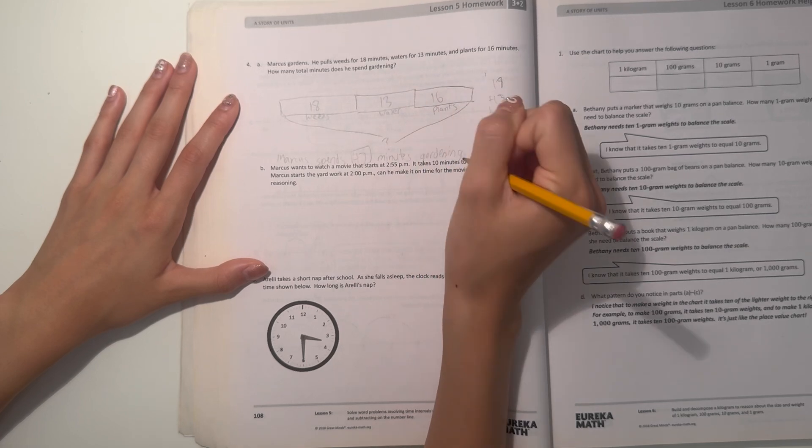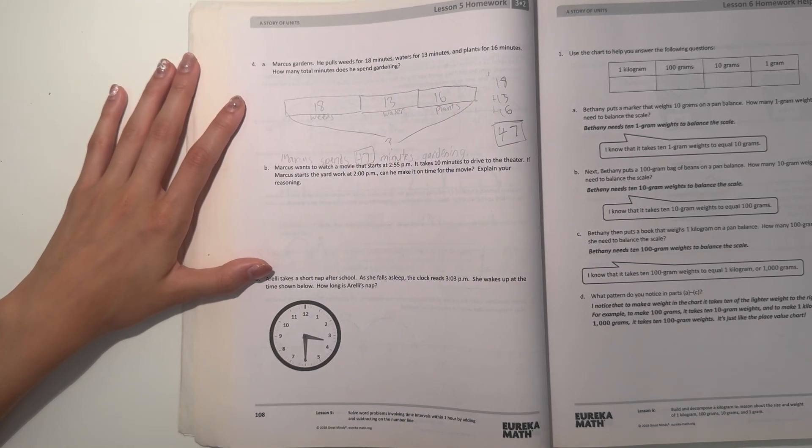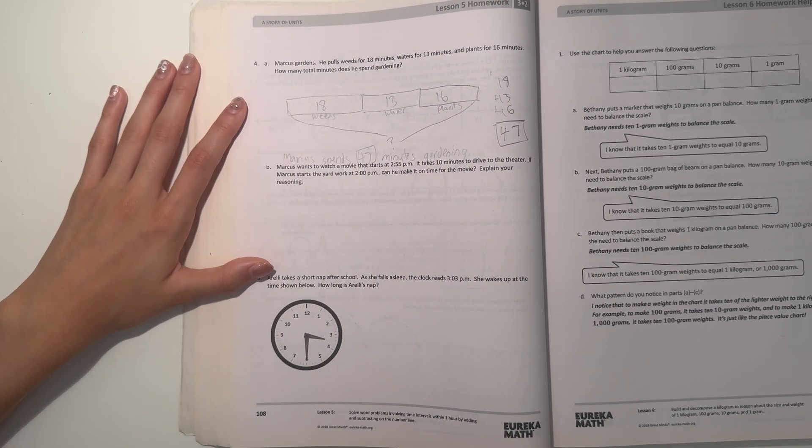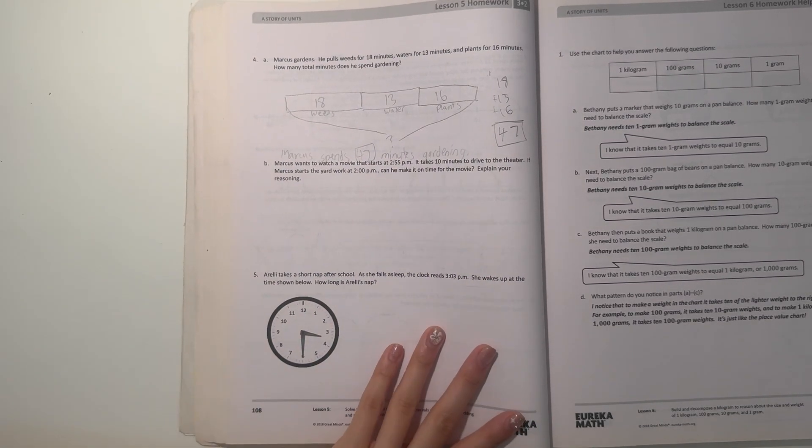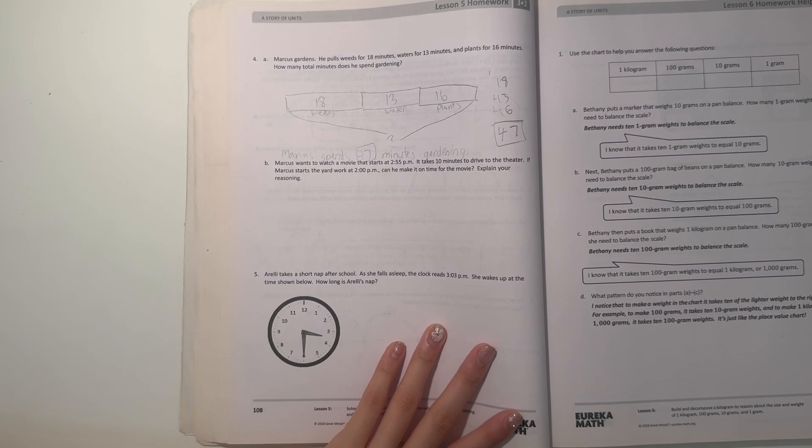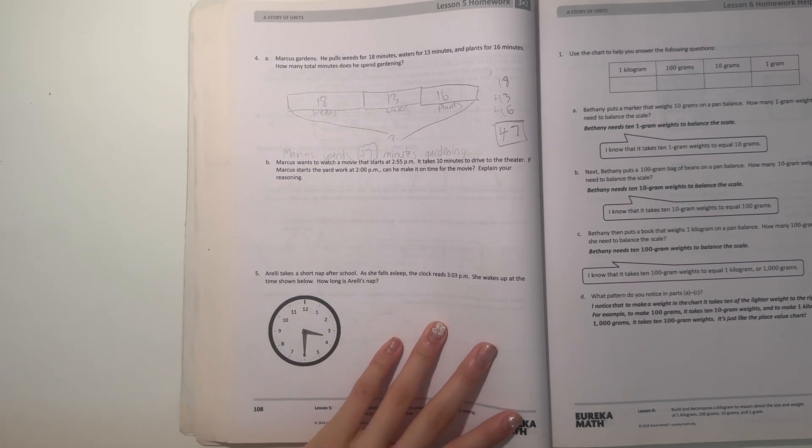So Marcus spends 47 minutes gardening. And B, Marcus wants to watch a movie that starts at 2:55 p.m. It takes 10 minutes to drive to the theater. If Marcus starts the yard work at 2 p.m., can he make it on time for the movie? Explain your reasoning.